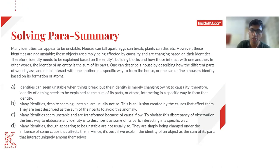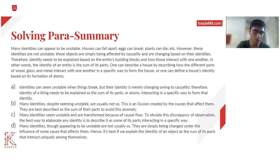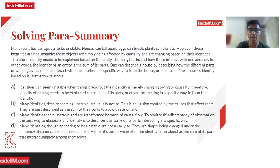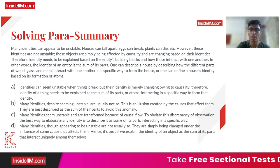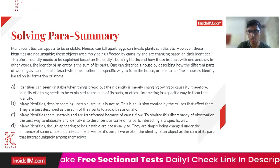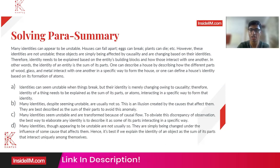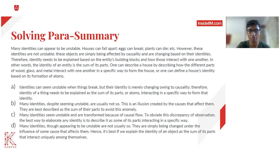Many identities can appear to be unstable. Houses can fall apart, things can break, plants can die. However, these identities are not unstable. These objects are simply being affected by causality and are changing based on their identities. Therefore, identity needs to be explained based on the entity's building blocks and how those interact with one another — using building blocks instead of whether they can break, which makes them appear to be unstable.